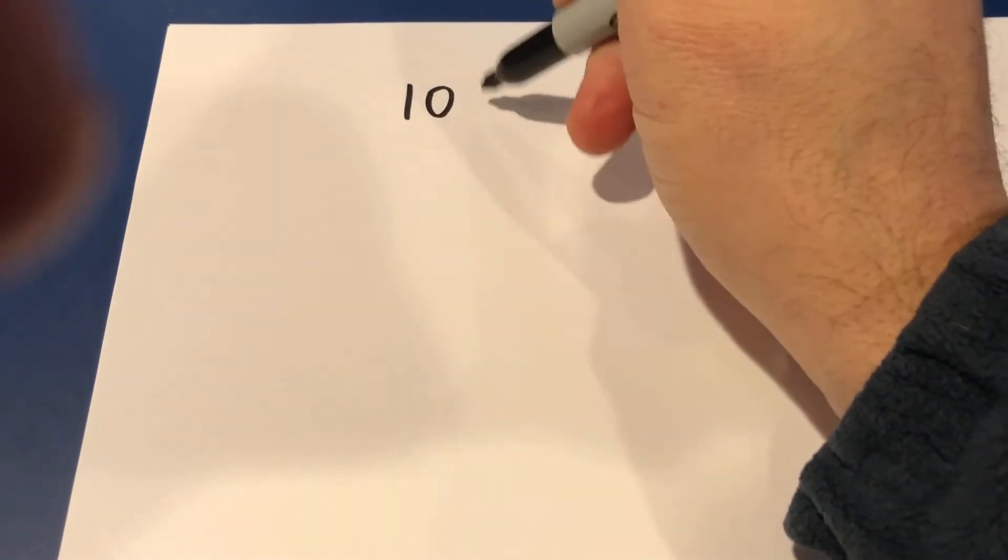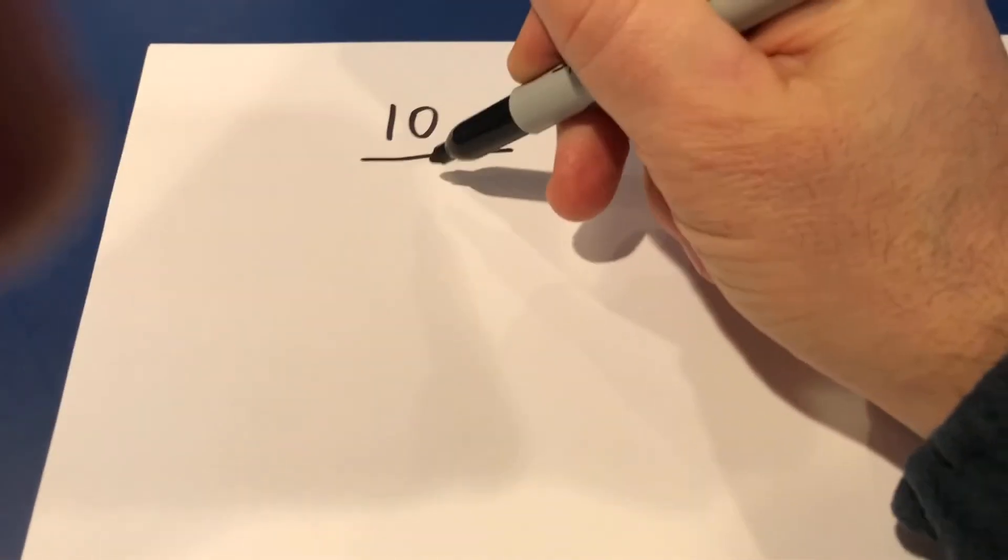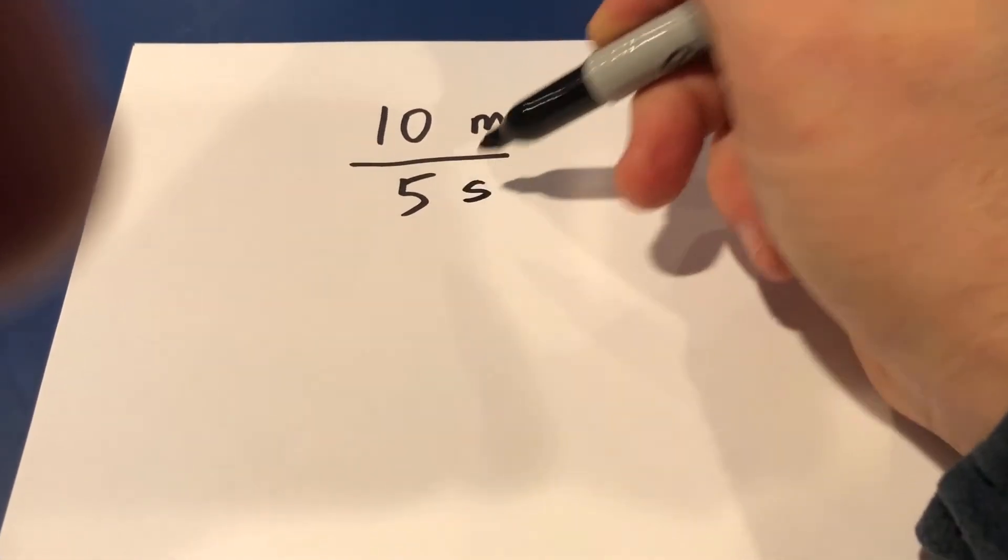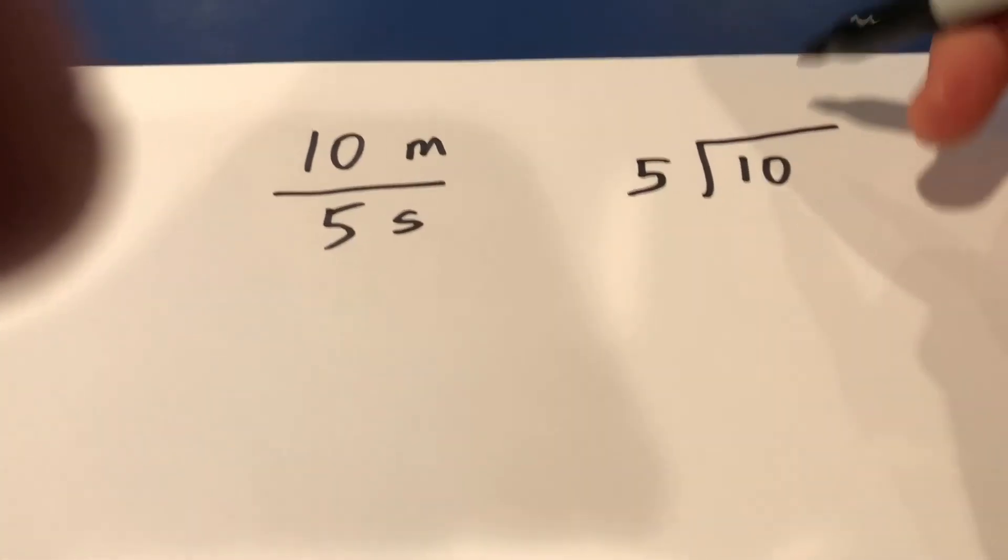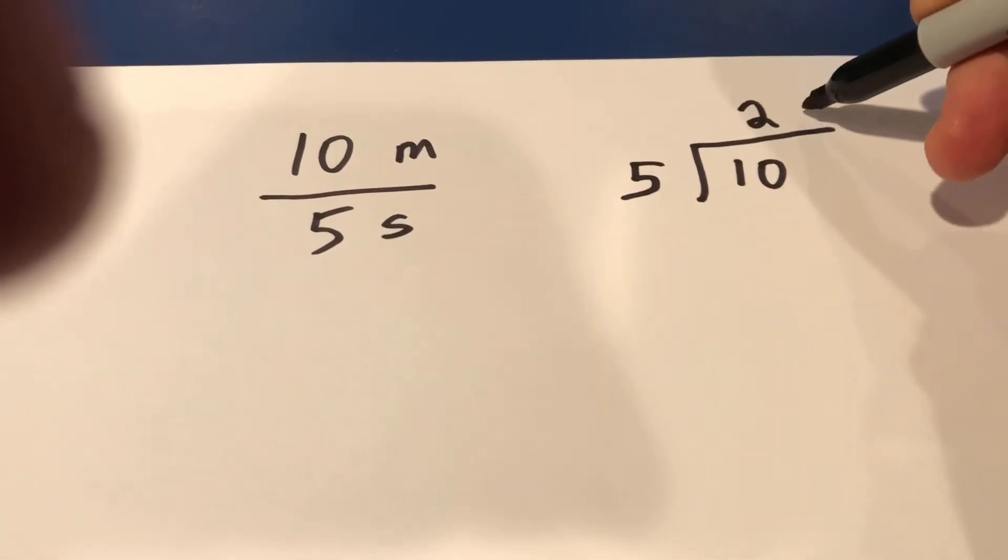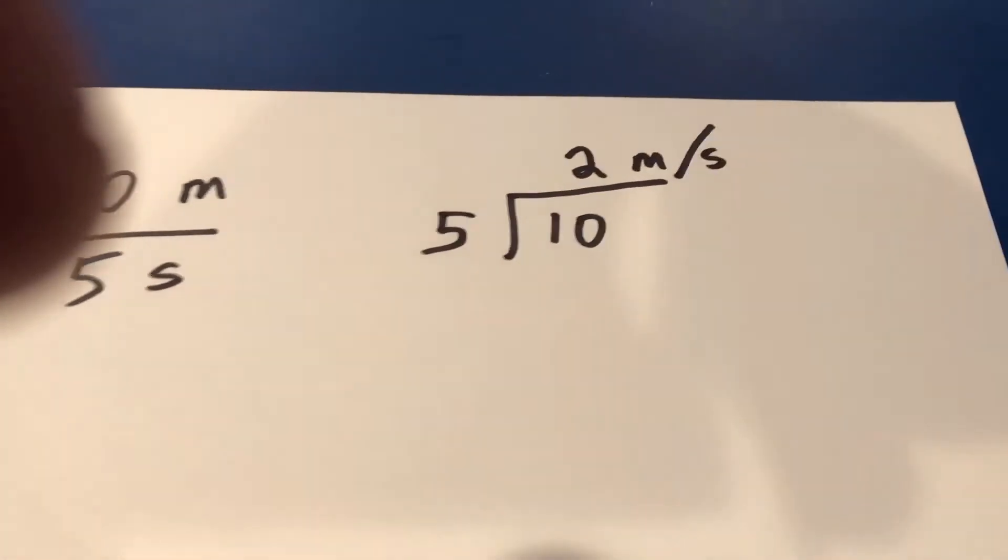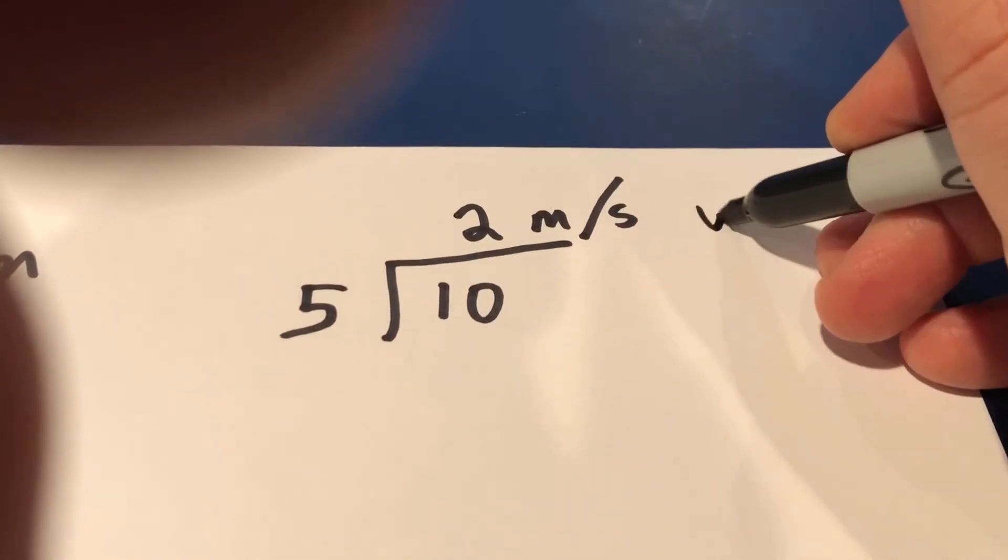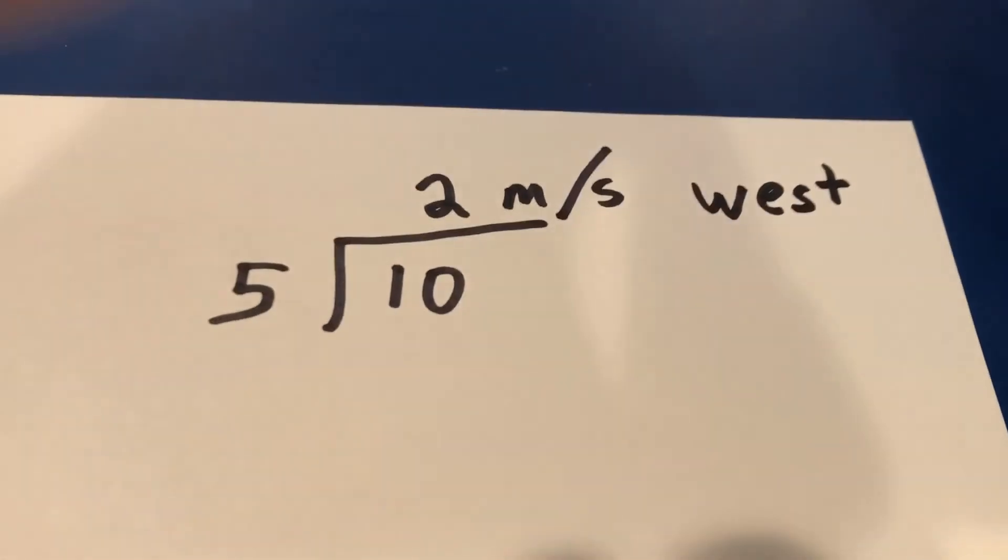I traveled 10 meters in five seconds. So we'll start by writing my distance, 10 meters, divided by five seconds. And so I put the 10 meters into the box, right? And I come up with two meters per second. I was headed west. So two meters per second west.